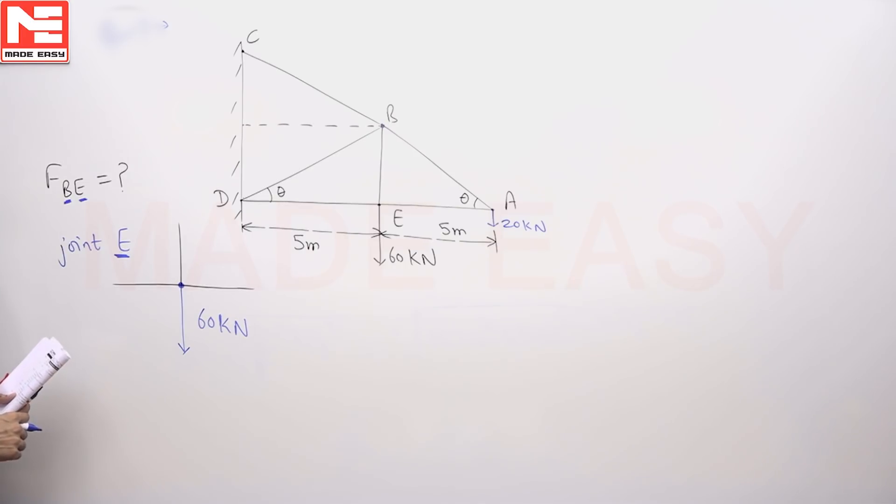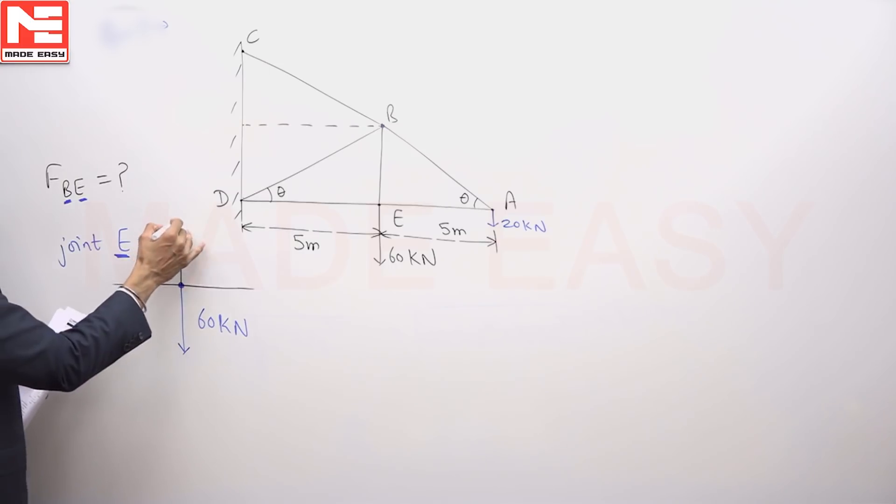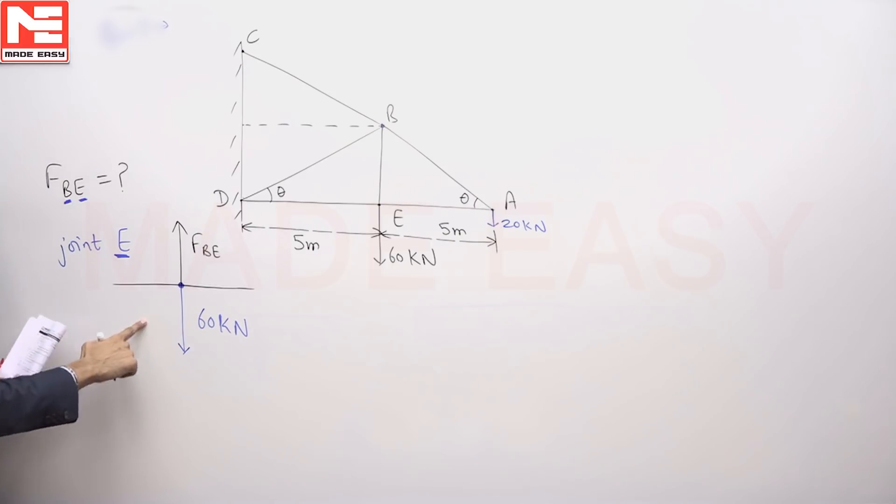That cannot cancel out the 60 kilo Newton. To cancel out the 60 kilo Newton, there must be some force in the vertical upward direction offered. And that force can be offered by member BE only.